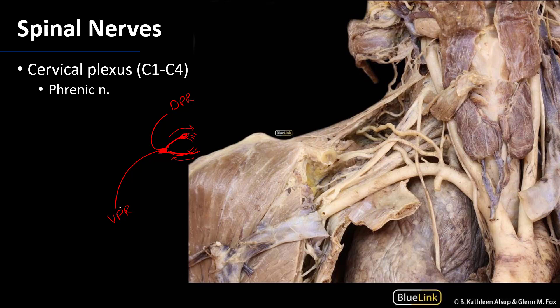It is typically the ventral primary rami which come together in certain areas to form plexuses. A plexus is a group of rami that coalesce and form various nerves. The advantage is that different spinal nerve levels can contribute to different nerves. When we talk about the cervical plexus, we're talking about the ventral primary rami of cervical nerves C1, C2, C3, and C4. One of the nerves that arises from the cervical plexus is the phrenic nerve.